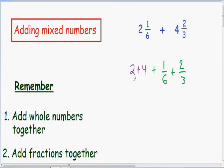So now we need to simplify this as much as possible. The first thing I'm going to do is add my two whole numbers together. We have 2 plus 4, which is equal to 6.